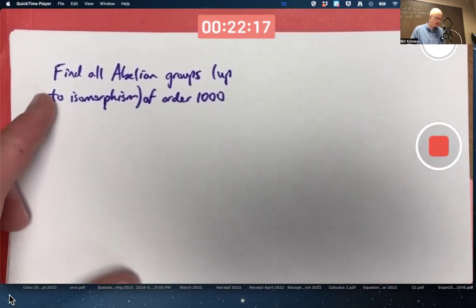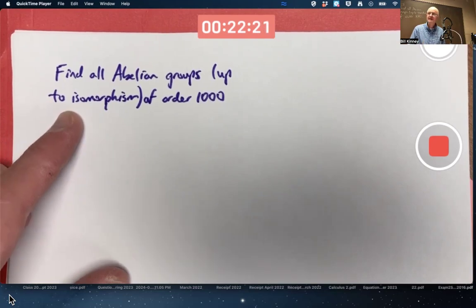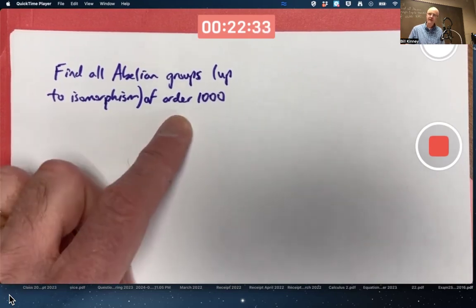This problem says find all abelian groups up to isomorphism. I put that in parentheses. If that phrase were not there, it would be implied. Whenever you say find all groups of a certain type, it's implied that it's up to isomorphism of order 1,000.